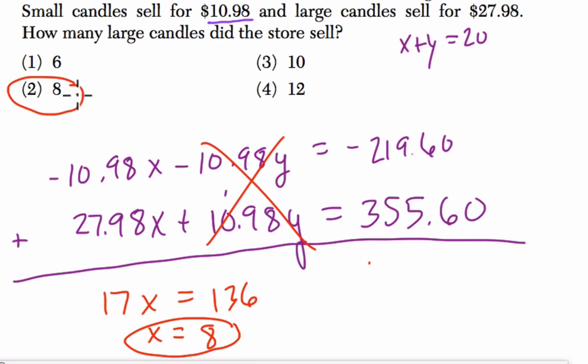You can check by plugging 8 back into the original equations. If there's 8 large, then there's 12 small. That's 20 altogether. Times the cost, and it will equal 355.60. But I'm not going to check because I don't want to take the time. Hope this helped.